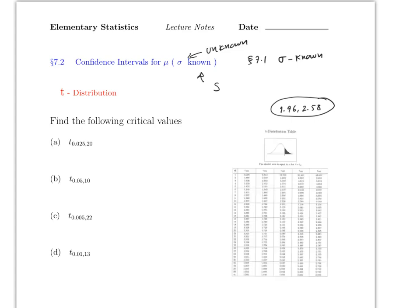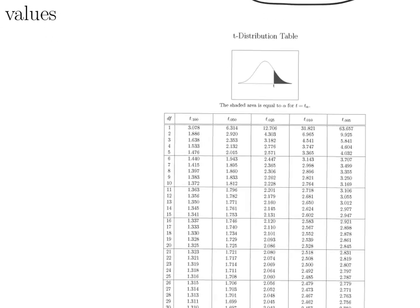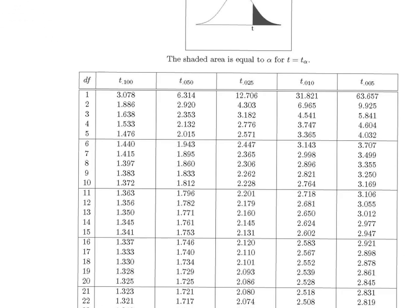Reading this table is actually easier than the z-table because you only look at one row. There is something called the degrees of freedom in the corner. To find the degrees of freedom, use n minus 1. Once you have the degrees of freedom, you look only at that row — for example, if degrees of freedom is 10, you only have five choices depending on the value of alpha over 2.